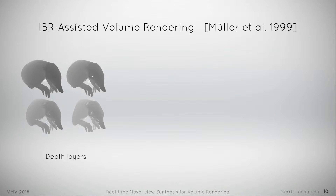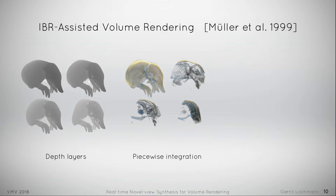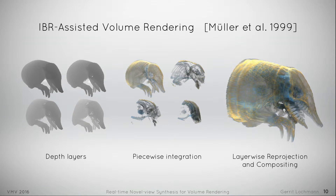Muller et al. introduced IBR-assisted volume rendering to face this issue. Here, the view rays are divided into multiple depth layers. The layers are then integrated partially and reprojected individually, and finally they are composed using emission-absorption blending. This method serves best for surface structures, but artifacts occur within constant regions, and gaps may become visible when the view is changed at a large degree.